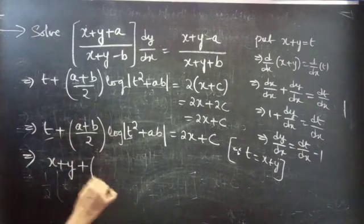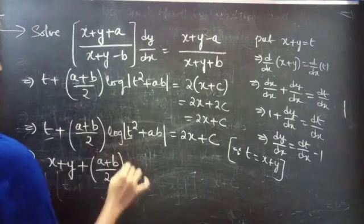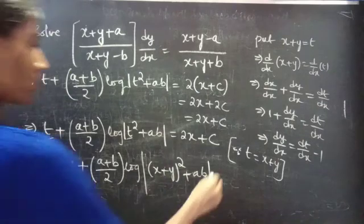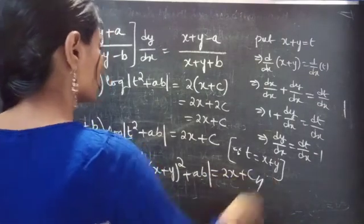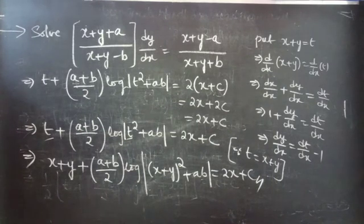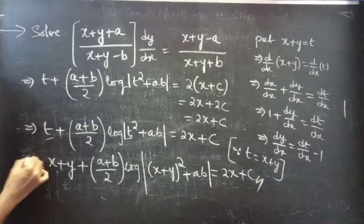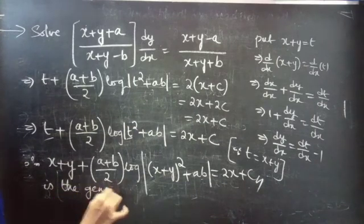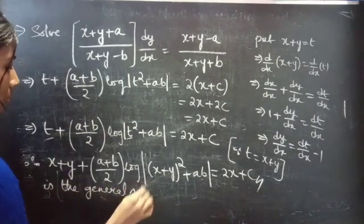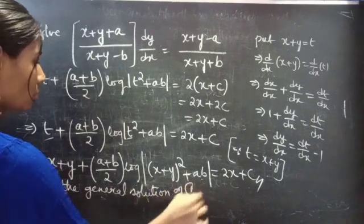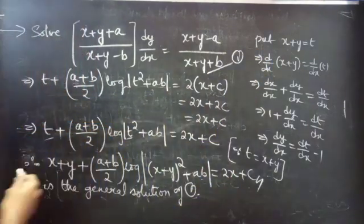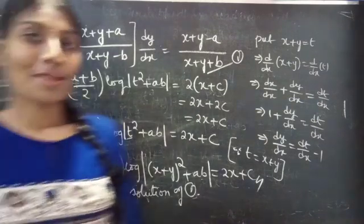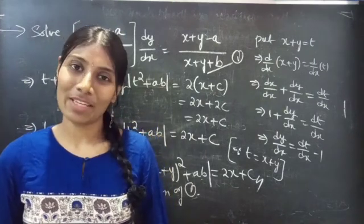Now replace t by x + y (since t = x + y). The general solution is: (x + y) + (a+b)/2 · log|(x+y)² + ab| = 2x + c. This is the general solution of the given differential equation. Hope you'll understand. We'll see you in the next video. Bye-bye.